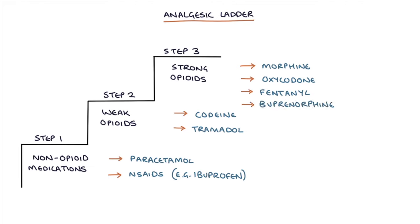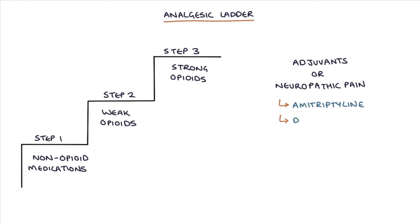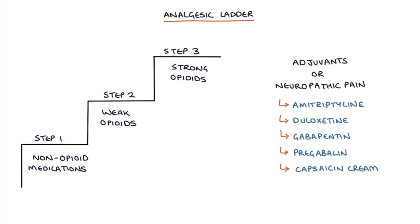Other medications may be combined with the analgesic ladder for additional effect — these are called adjuvants — or they can be used separately to manage neuropathic pain. These medications include amitriptyline, which is a tricyclic antidepressant; duloxetine, which is an SNRI antidepressant; gabapentin, which is an anticonvulsant; pregabalin, which is also an anticonvulsant; and capsaicin cream, which is a topical treatment from chili peppers.